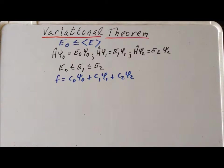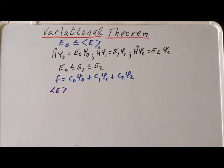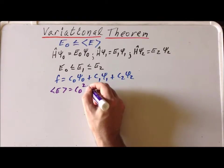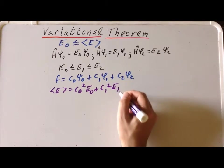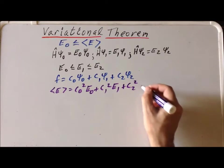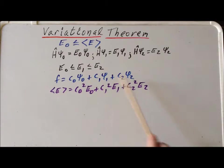We also know that if we form the expectation value of this particular function — we'll call that expectation value E — the expectation value can be calculated as c sub 0 squared times E sub 0, plus c1 squared times E1, because E1 is the eigenvalue that goes with psi 1, plus c2 squared times E sub 2, because E sub 2 is the eigenvalue that goes with that particular eigenfunction. So now what we need to prove is that this expression is greater than or equal to E sub 0.